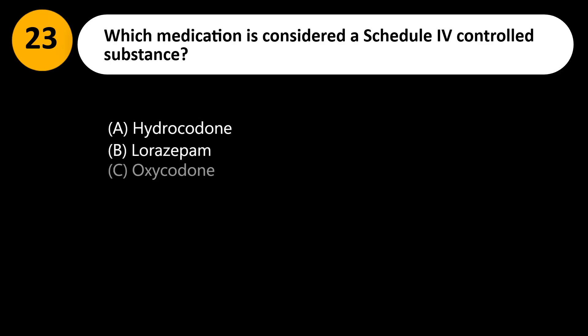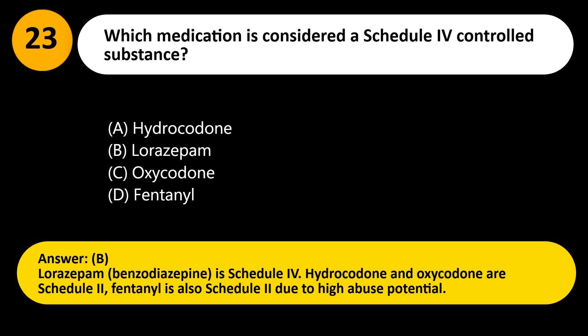Which medication is considered a Schedule IV controlled substance? A. Hydrocodone. B. Lorazepam. C. Oxycodone. D. Fentanyl. Answer: B. Lorazepam, a benzodiazepine, is Schedule IV. Hydrocodone and oxycodone are Schedule II, and fentanyl is also Schedule II due to high abuse potential.